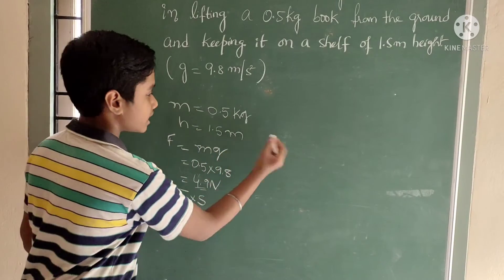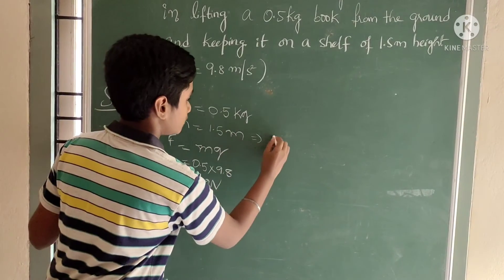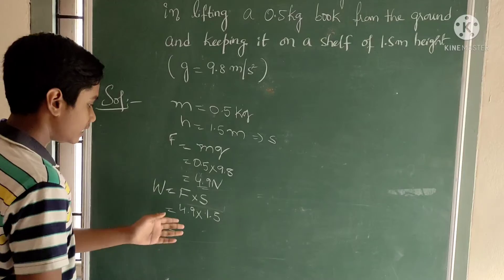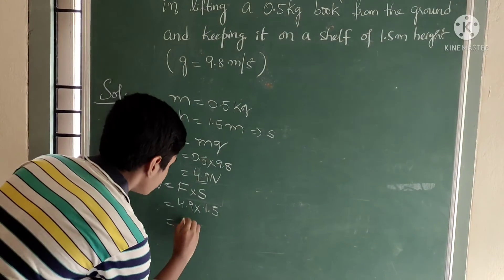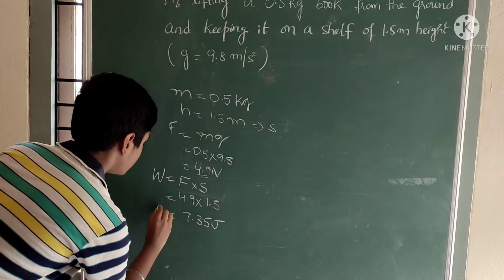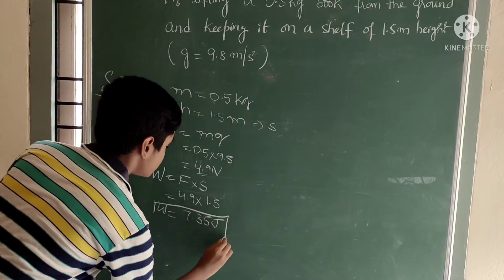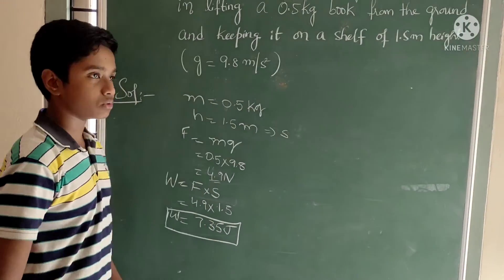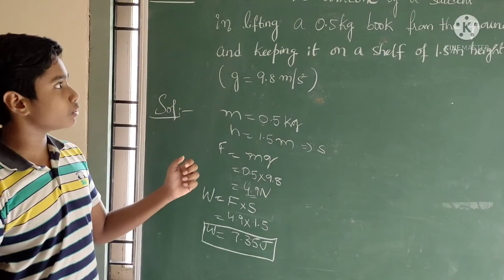Here height is considered as displacement. By calculating 4.9 into 1.5, 7.35 joules. Therefore, we got work done is equal to 7.35 joules. These are the problems based on the work done.